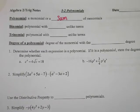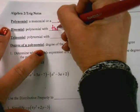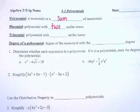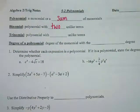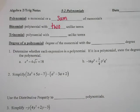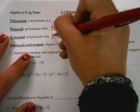A binomial is a polynomial with two unlike terms. If they were alike, then we could add them together and we get back to one term. And then a trinomial is three unlike terms.